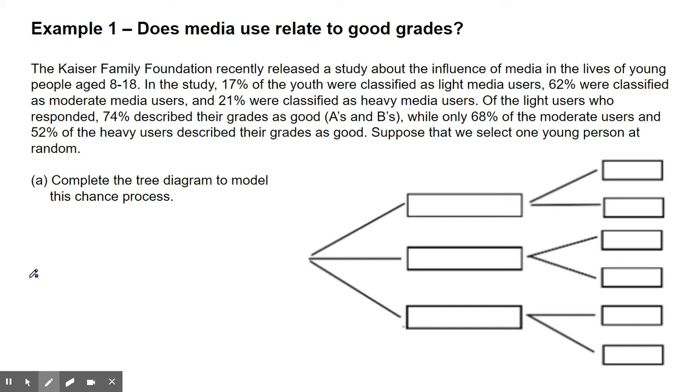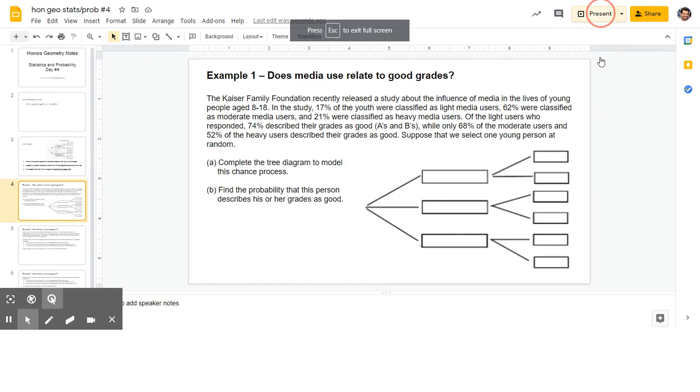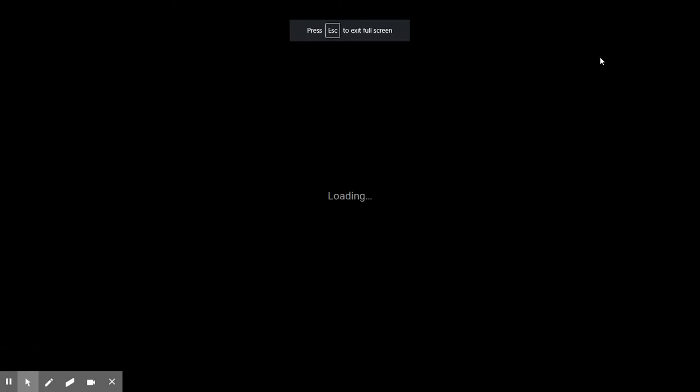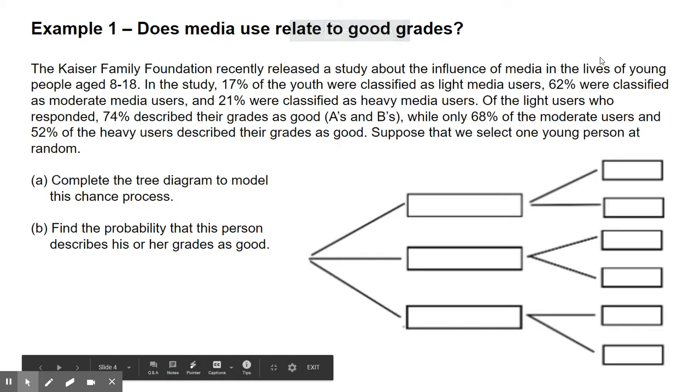Suppose we select one young person at random, complete the tree diagram to model this process, and then question B, which I'm going to add. And then part B says, find the probability that this person describes his or her grades as good.